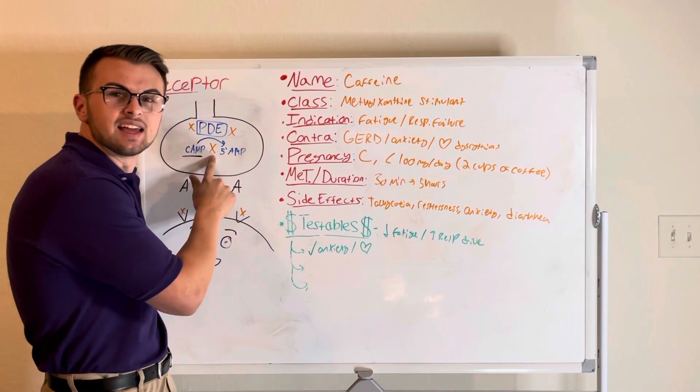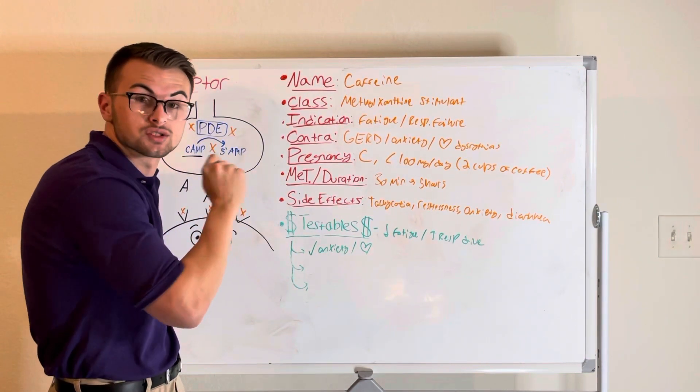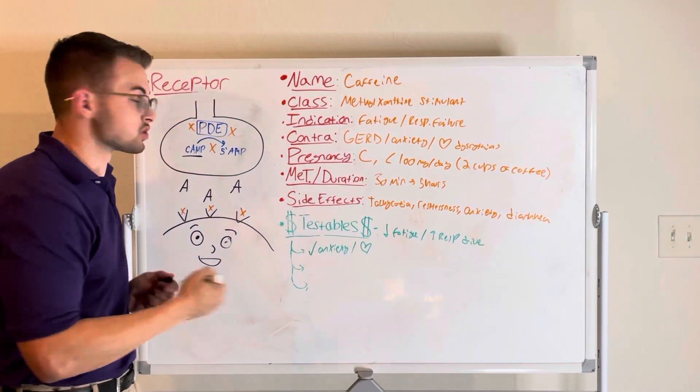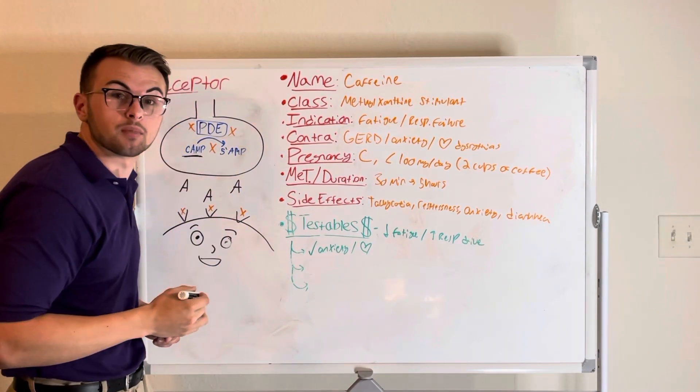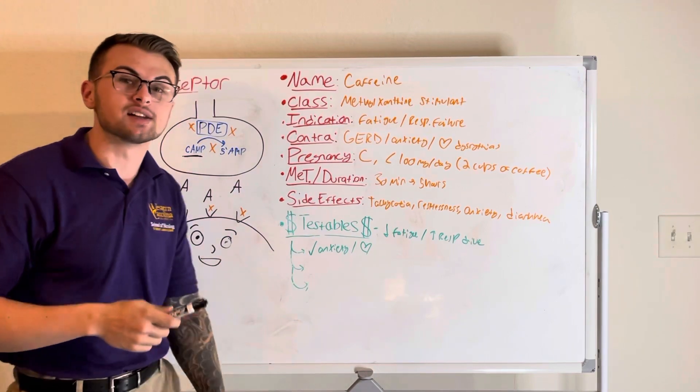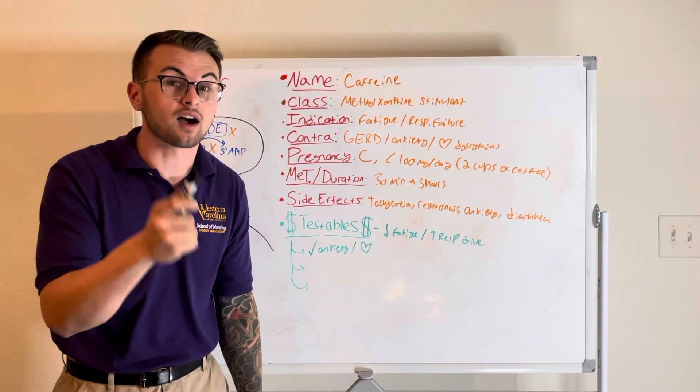Caffeine also inhibits our phosphodiesterase enzymes. This means that we will accumulate our second messengers like cyclic adenosine monophosphate or CAMP. This is important because it sensitizes our respiratory centers in the medulla to carbon dioxide.